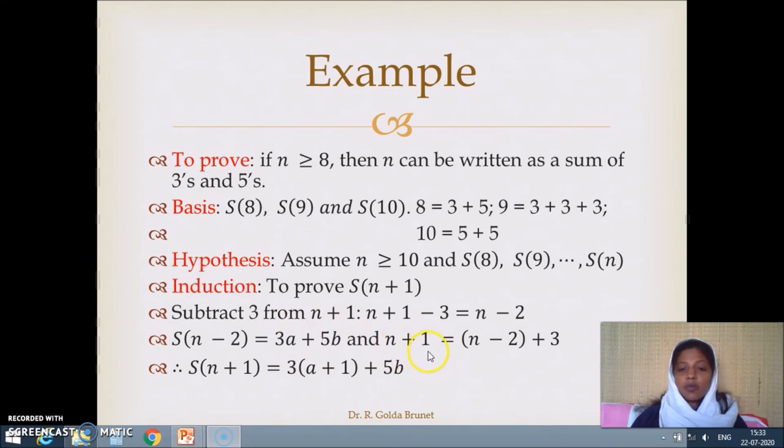Therefore, n+1 equals (n-2) plus 3, which is one more 3 than n-2. So S(n+1) equals 3(a+1) plus 5b. Thereby we can write n+1 as some multiples of 3 plus some multiples of 5, and we have proved that for any n greater than or equal to 8, n can be written as the sum of 3s and 5s.